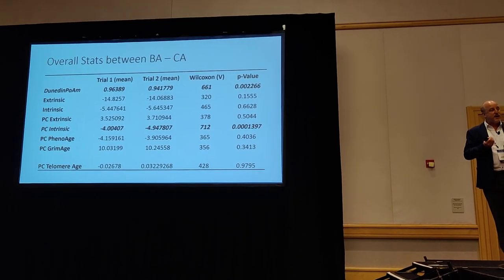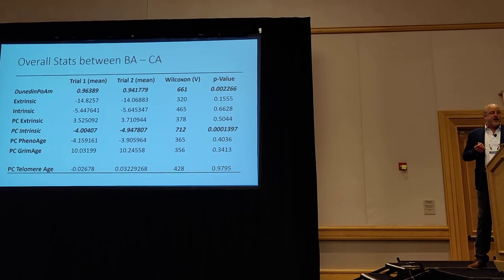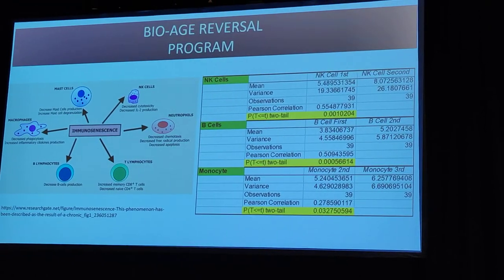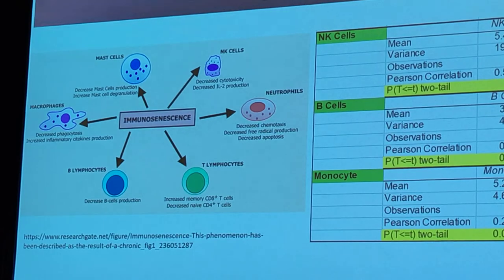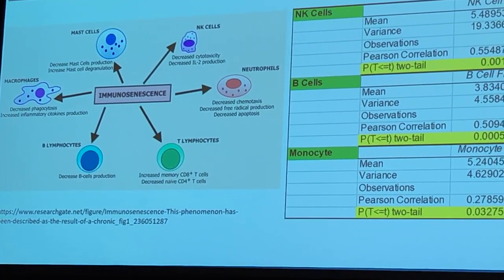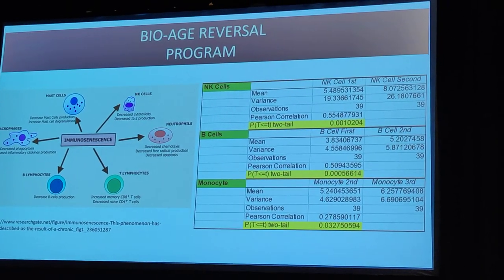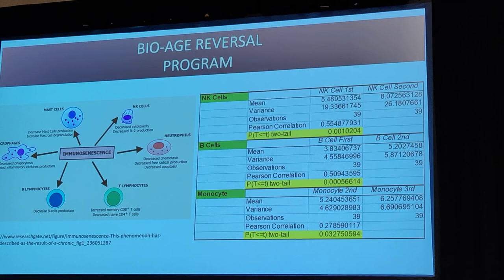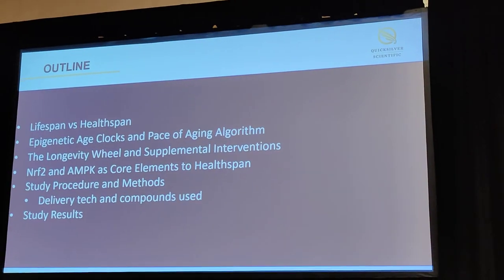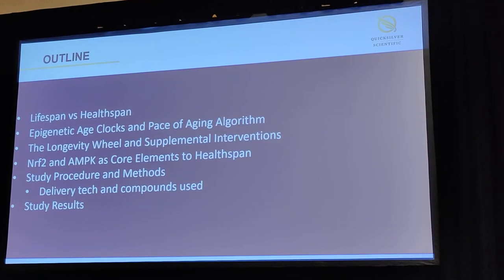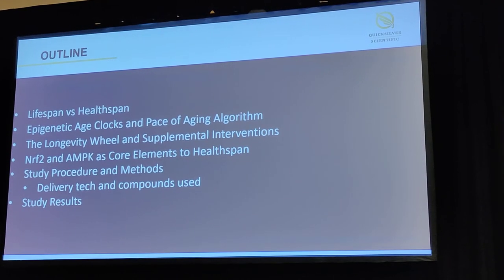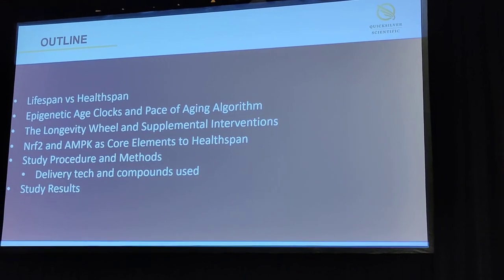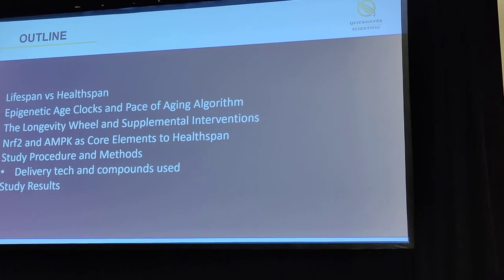We have proof that we can use these compounds as calorie restriction mimetics to change the rate of aging. One of the huge things in aging is immunosenescence — losing B cell production, natural killer cells losing power, and T lymphocyte population changes. In the epigenetic markers we saw a significant positive shift in natural killer cells, B cells, and monocytes. We now have ways — lifestyle, nutrition, and supplementation — to increase the healthspan and probably increase total lifespan, and we can use epigenetic age clocks before and after interventions to track direction.